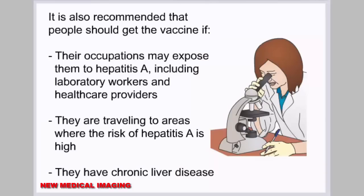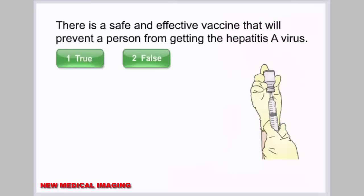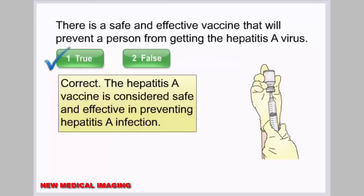The vaccine is also recommended for people whose occupations may expose them to hepatitis A, including laboratory workers and healthcare providers, those traveling to high-risk areas, people with chronic liver disease, men who have sex with men, people who use illicit drugs, and those receiving certain medical treatments such as clotting factor concentrates. Quiz review: There is a safe and effective vaccine that prevents hepatitis A — this is true.